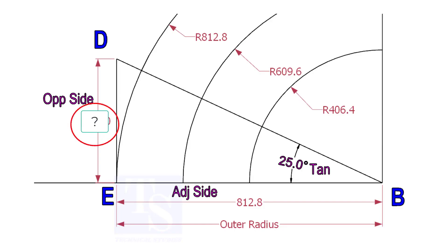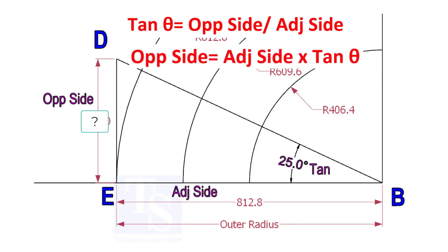To calculate ED, we need to apply the formula: tan-theta equals opposite side divided by adjacent side. Opposite side equals adjacent side multiplied by tan-theta.